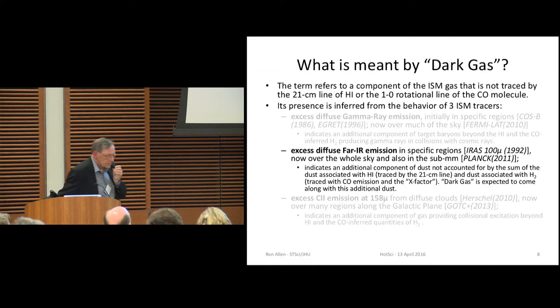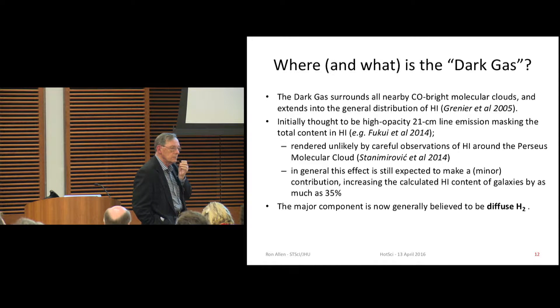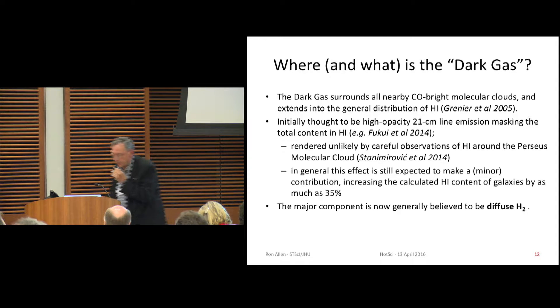The dark gas, Isabel Grenier is in the audience, I believe, and she has had a tremendous influence on this field. And in general, this stuff surrounds bright molecular clouds, and we've talked about what it could be. It was thought for a while that it might have been dense H1, optically thick H1, or the kind that I mentioned earlier. We know now that, from Stanimirovich and others, that that's not the case. Although this does still make a contribution to the missing gas, the missing baryons in the galaxy. But the major component, of course, is generally thought to be diffuse H2.